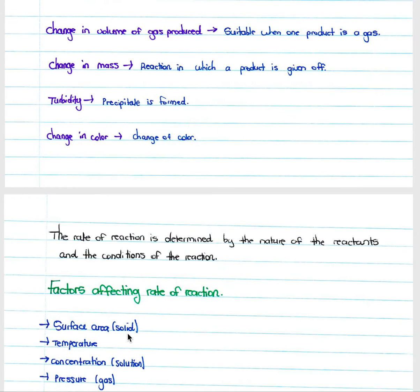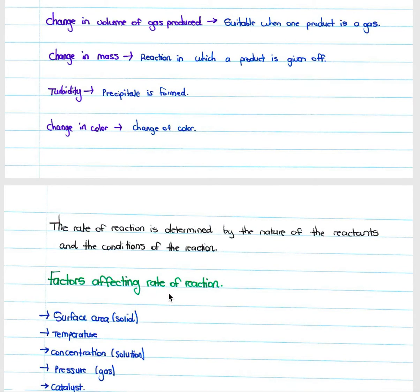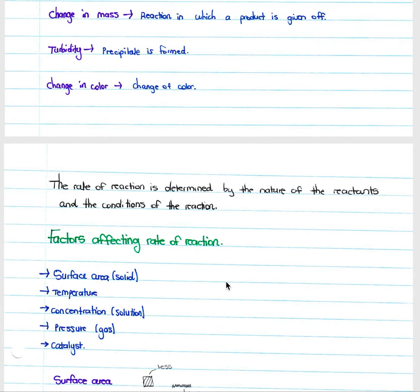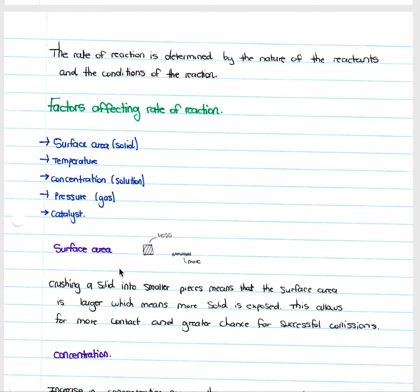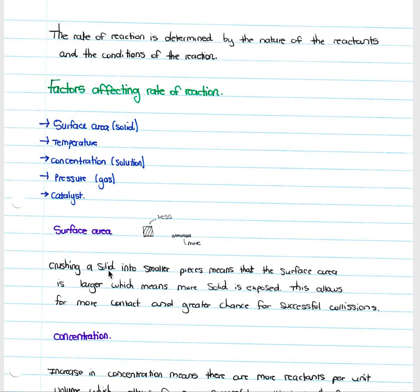The rate of reaction is determined by the nature of the reactants and the conditions of the reaction. There are five factors that affect the rate of reaction: surface area, temperature, concentration, pressure (for gases only), and catalysts.